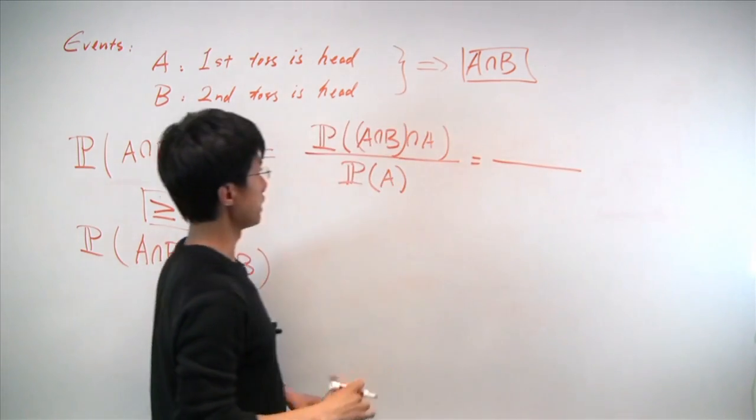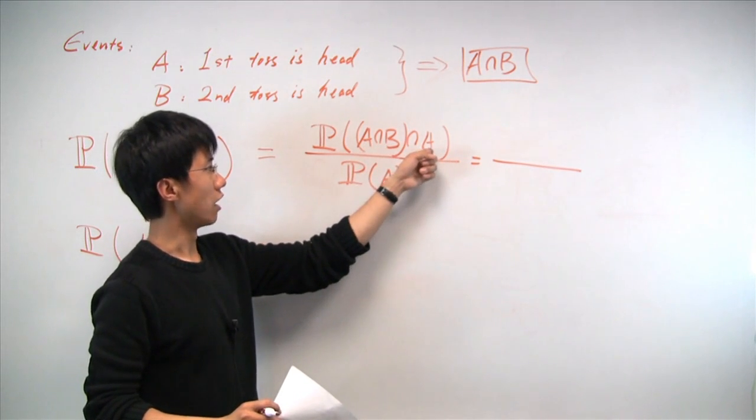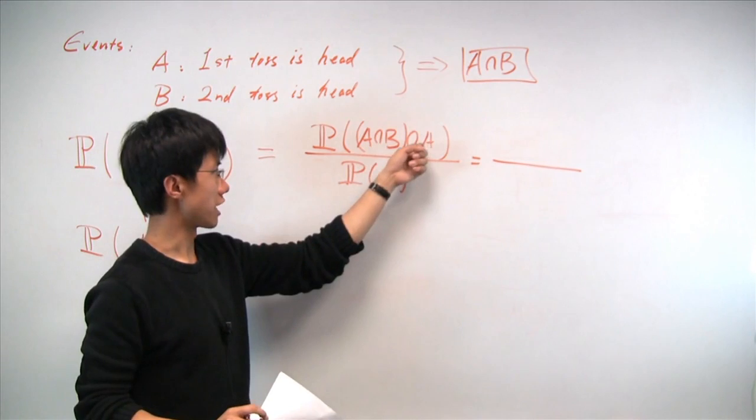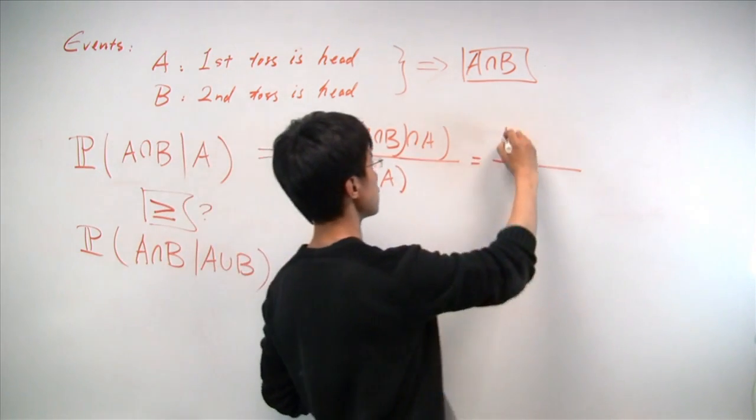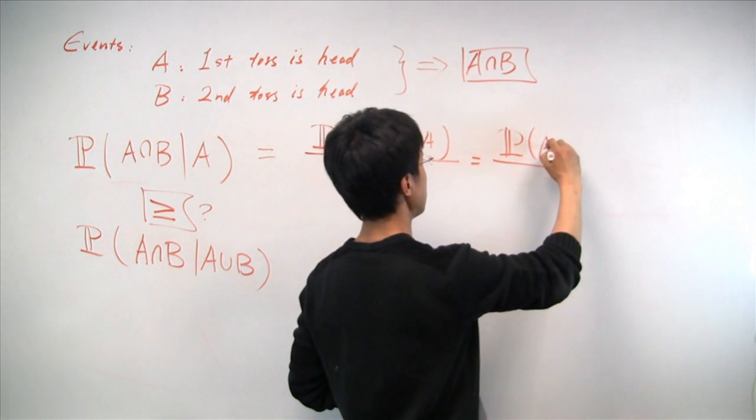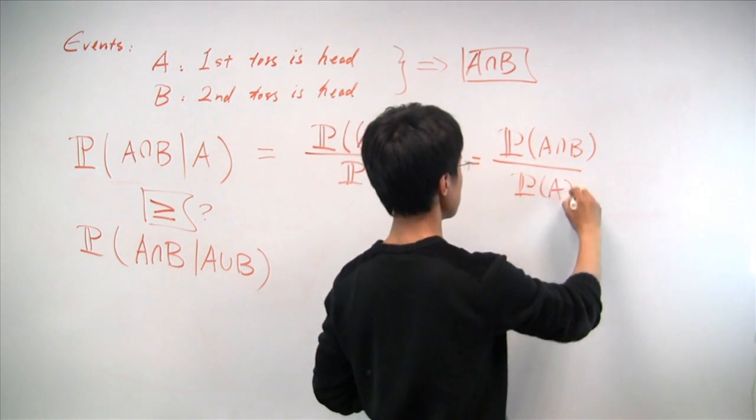Now, the top quantity, since we know that A and B is a subset of event A, and taking the intersection of these two quantities will just give us the first event, so we have A and B. And the bottom is still probability of A.